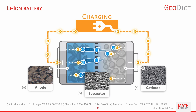As a short recap on how lithium-ion batteries work: there are two electrodes — a cathode and anode — both with active materials that drive the electrochemical reaction. Lithium ions are intercalated or de-intercalated into the material to store or release energy. In between the electrodes is a porous separator that only lets lithium ions pass, while electrons travel through the external circuit. During charging, lithium ions move from cathode to anode.